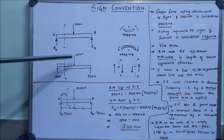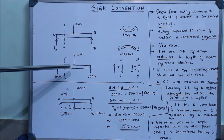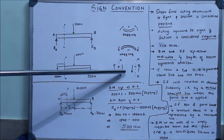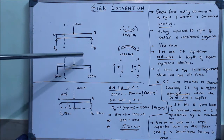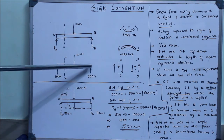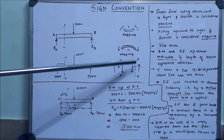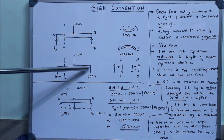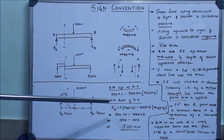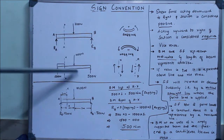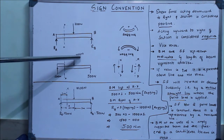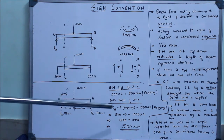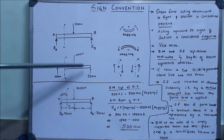Let me say I take the forces to the right of the section. The sign convention I need to follow is: to the right of the section, the 1000 newton load is acting downward, so this force is going to be positive. And here there is 500 newtons to the right of the section acting upward, so you need to take it as negative. So the total resultant of these two forces is going to be 1000 minus 500, that is 500 newtons.